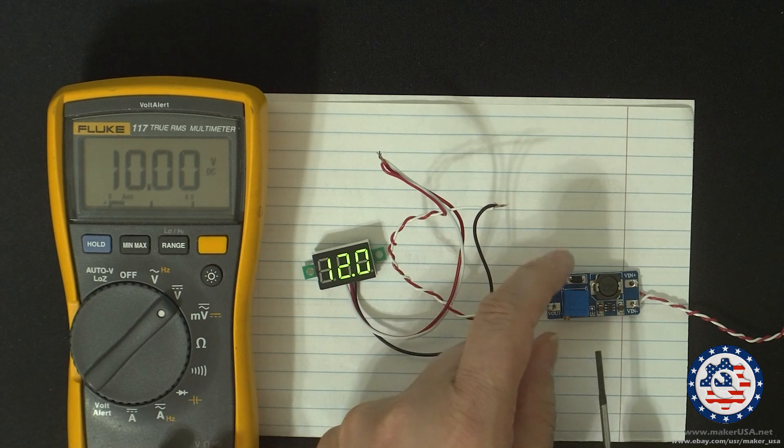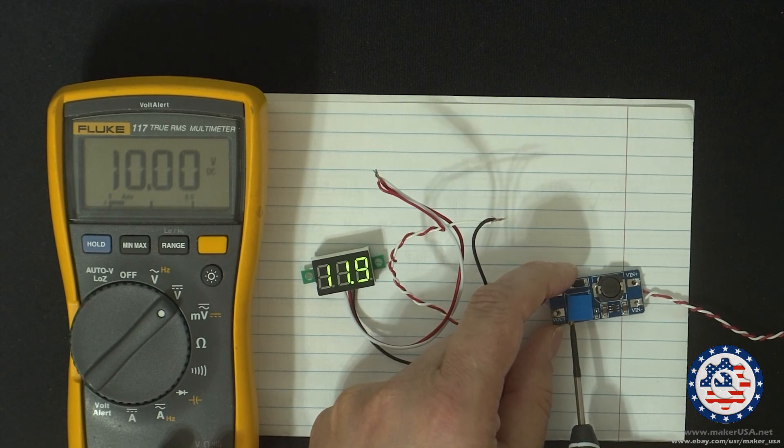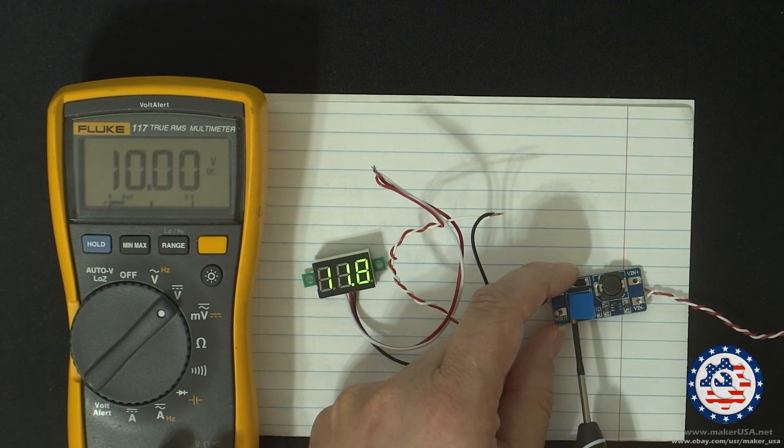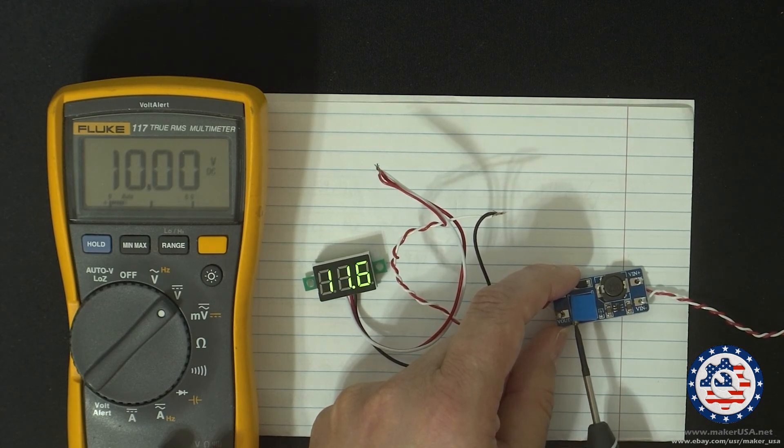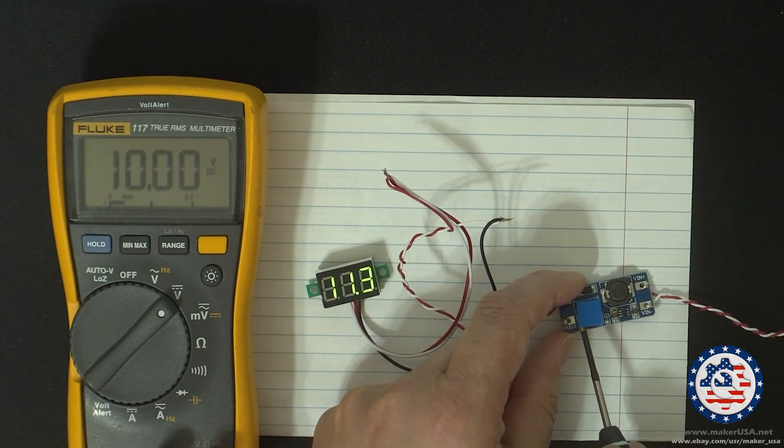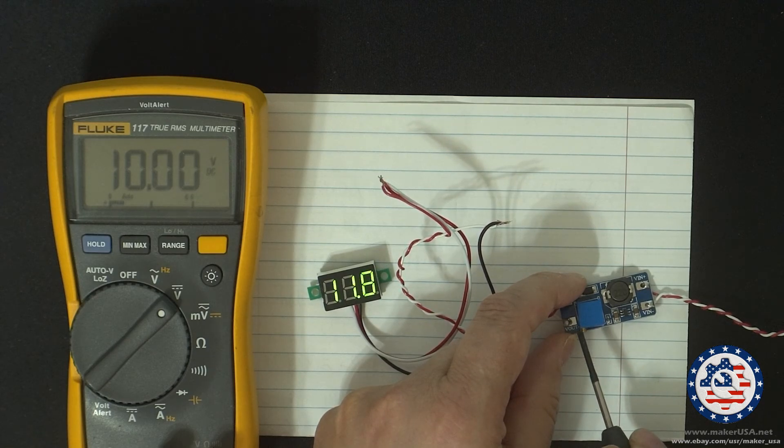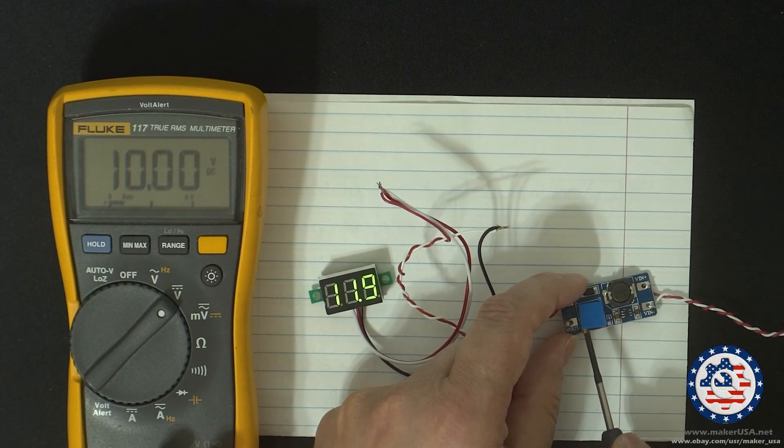So there you have a potentiometer here that you can adjust the output voltage. So I'm reducing it. I'm going to take it back to 12 volts.